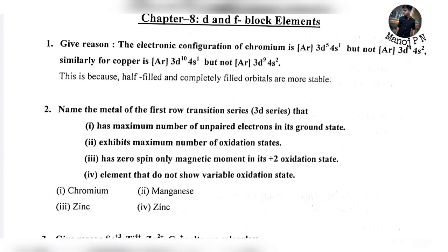The electronic configuration of chromium is AR 3D5 4S1, but not AR 3D4 4S2. Similarly, for copper, it is AR 3D10 4S1, but not AR 3D9 4S2.